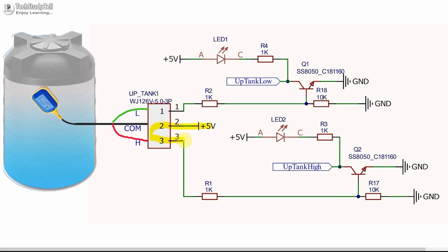We are applying the 5V supply to this terminal, and it is connected with the base of this NPN transistor. As we are supplying positive voltage at the base of the NPN transistor, this transistor will turn on, so current can flow collector to emitter. If this transistor is on, this LED will also turn on, and this GPIO pin of the ESP32 will become low as it is connected with the ground. And at this terminal, we are not supplying any positive voltage.